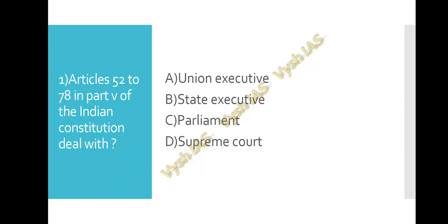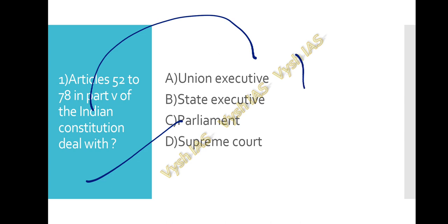Question number one: Articles 52 to 78 in Part 5 of the Indian Constitution deals with — is it the Union Executive, the State Executive, the Parliament, or the Supreme Court? Pause the video and think about it. The answer for question number one is option A — the Union Executive.